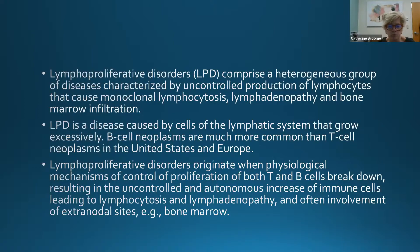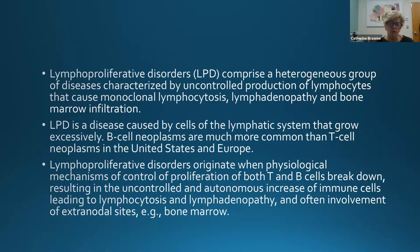B-cell lymphoproliferative disorders are much more common than T-cell, particularly in the United States and Europe. If you go to Asia — Japan, China — T cells are more common than B cells. They originate when mechanisms controlling both proliferation and programmed cell death break down, resulting in uncontrolled autonomous increase in these cells, leading to lymphocytosis and lymphadenopathy.